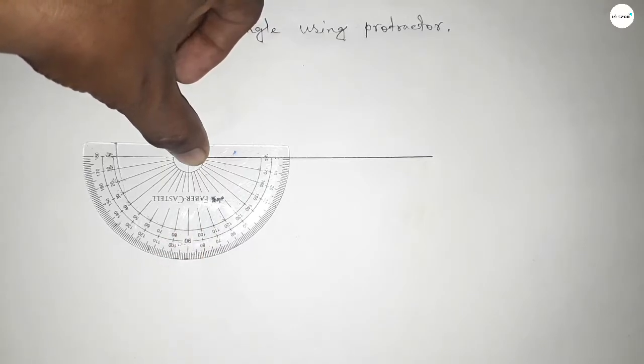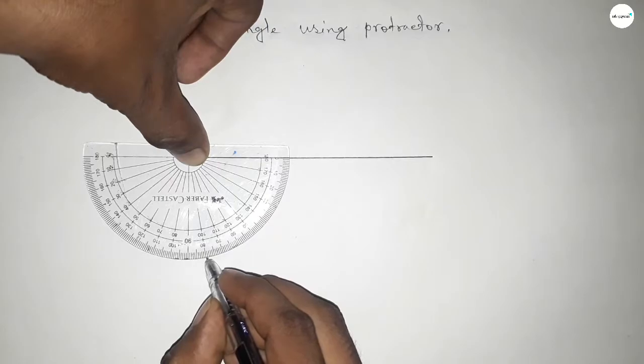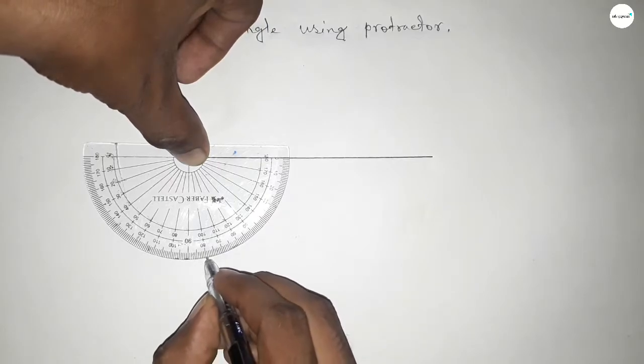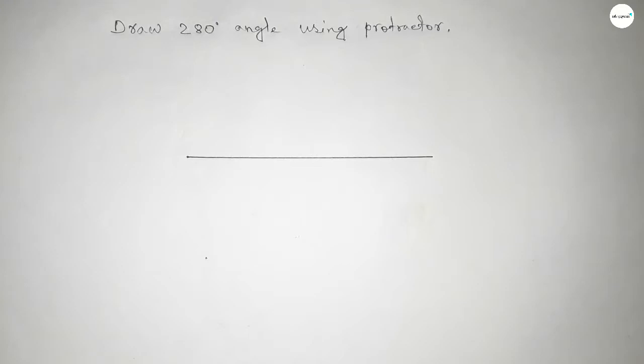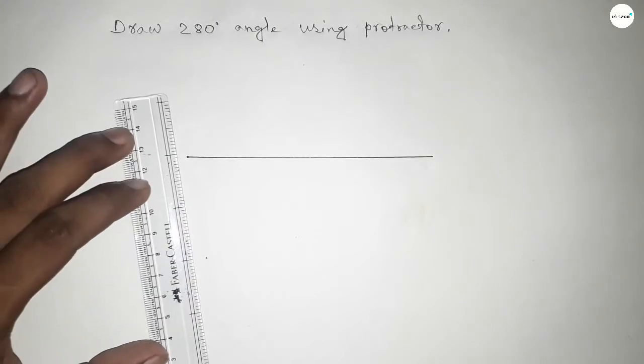So by adding 100 degrees with 180 degrees, we can get 280 degrees. Now joining this to get the 280 degree angle.